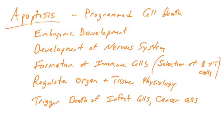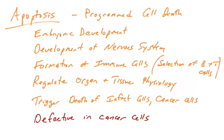Regulating organ and tissue physiology — cells in your body need to be eliminated just to maintain the natural state of your organs. Also, the body sometimes will trigger death of cells that are infected by a virus, or detect precancerous cells and delete them from the body. So apoptosis is a very normal, natural, highly regulated cellular process.